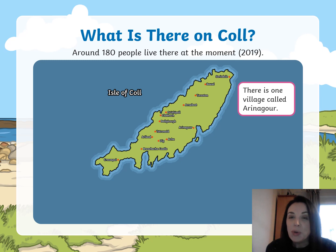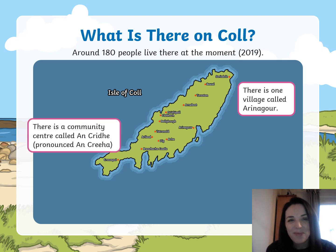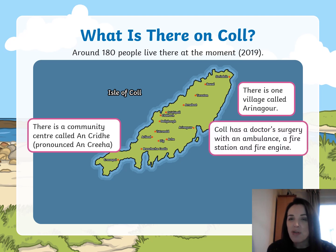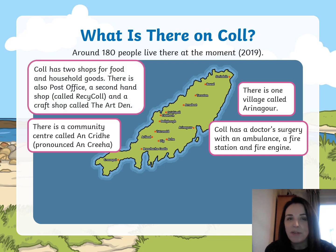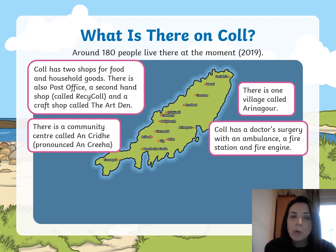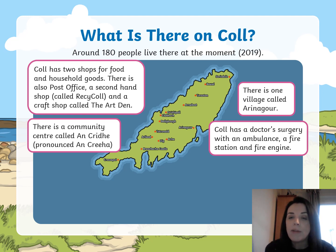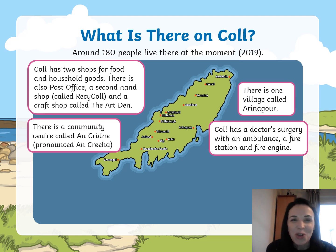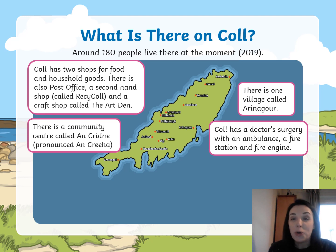There is one village called Arinagor, and a community centre called Ancria. Coll has a doctor's surgery with an ambulance, a fire station and a fire engine. It has two shops for food and household goods, a post office so you can send and receive things, a second-hand shop called Recycle — I like that — and a craft shop called The Art Den.